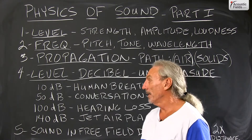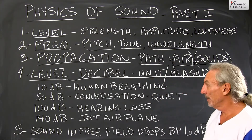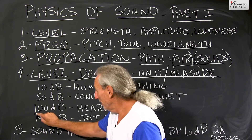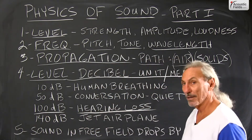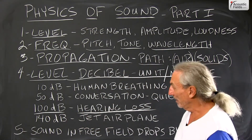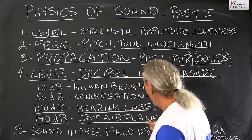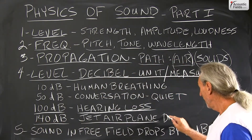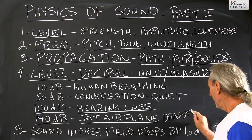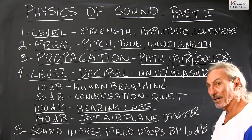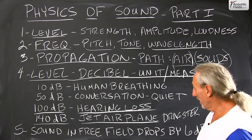50 dB is normal conversation, probably about what we're running at right now. 100 dB — this is where we have the hearing loss, I have to be real careful. And then 140 dB for an extreme would be a jet engine or a dragster. I did some measuring one time at a track and it was 160 — that's at the start line. Got to be very, very careful.